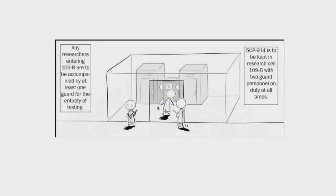SCP-914 is to be kept in research cell 109B with two guard personnel on duty at all times. Any researchers entering 109B are to be accompanied by at least one guard for the entirety of the testing.